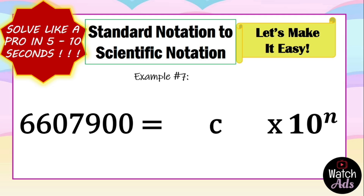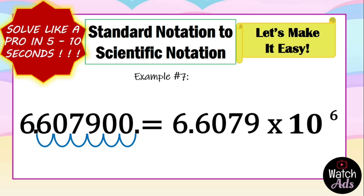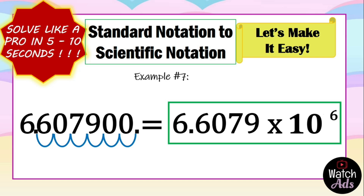Let's have our final example: six million, six hundred seven thousand, nine hundred. This is one of the examples I mentioned in the rules — what if a zero appears in between the non-zero digits? Since this number is greater than one, the exponent is certainly positive. We locate the original decimal point, then put the destination or second decimal point to the right of the first non-zero digit — between the two sixes. We count the digits in between the two decimal points: we have six digits, so our exponent is six. We drop all zeros except the one between the non-zero digits. Our numerical coefficient is 6.6079, and that is our final answer.